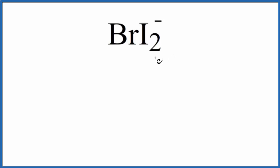First off, let's count the valence electrons up for BrI2-. Bromine, group 17 (sometimes called 7A), has 7 valence electrons. Iodine is in the same group, so it has 7, but we have 2 iodine atoms.